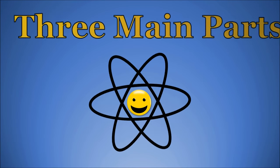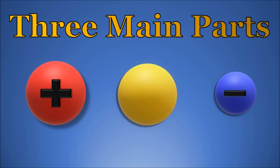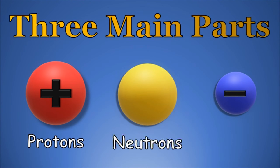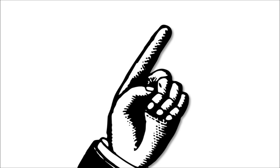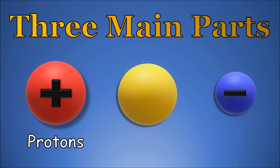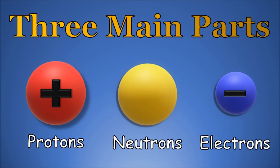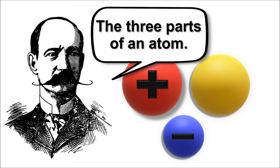To really understand me, we gotta start with the fact that I'm made up of three main parts. They're called Protons, Neutrons, and Electrons! One more time — they're called Protons, Neutrons, and Electrons! The three parts of an atom.